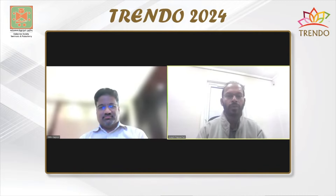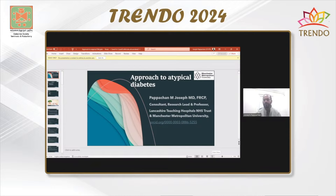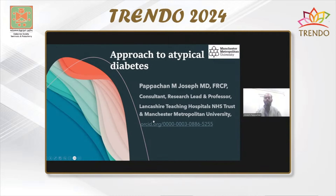Today I'll be talking about atypical diabetes — an approach to different forms of diabetes. I'm not trying to complicate the lecture by giving a lot of unusual rare kinds of diabetes; it's basically an approach to different forms of diabetes in your usual clinical practice. As clinicians, we all deal with different types of diabetes and problems related to their management, and it's slightly tricky to approach some of the cases.